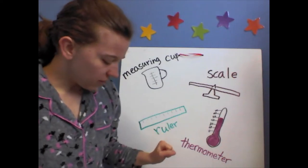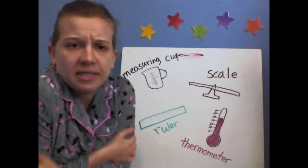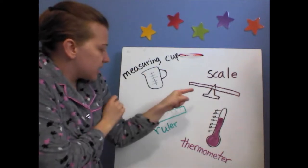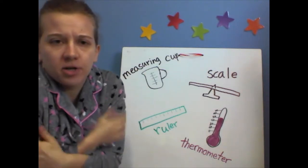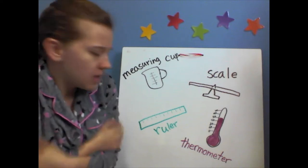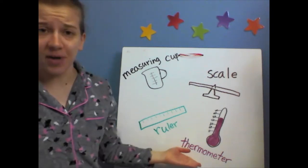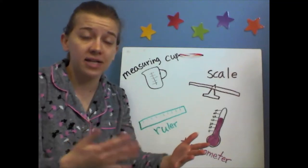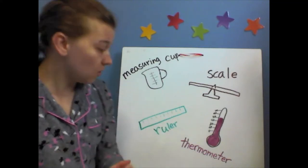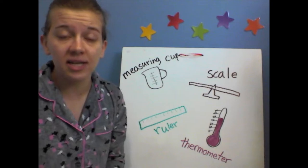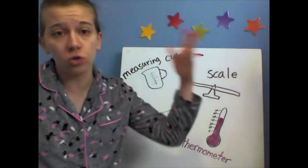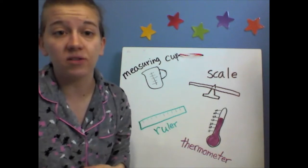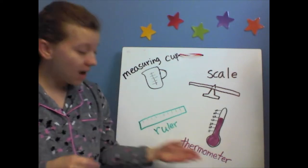Which measuring tool would you use to find out how cold it is outside? Would you use a measuring cup, a scale, a ruler, or a thermometer? A thermometer, right? A thermometer measures temperature, and how cold it is outside is a question about temperature. So we would use a thermometer to tell us if it's cold or hot or cool or warm — the different types of temperature it is outside. We would use a thermometer for that.